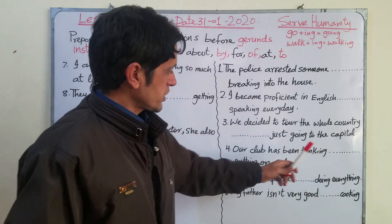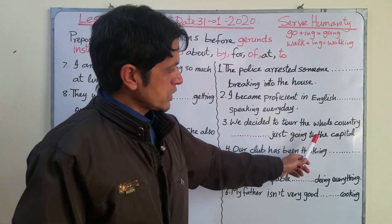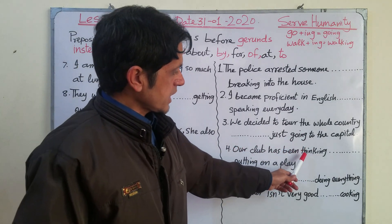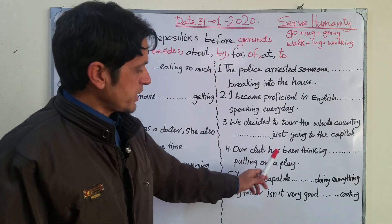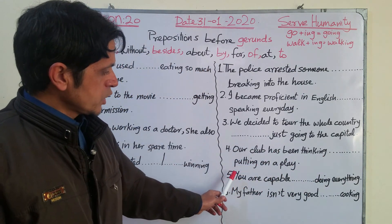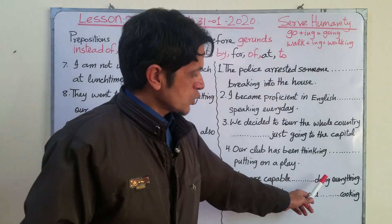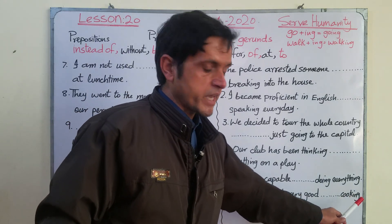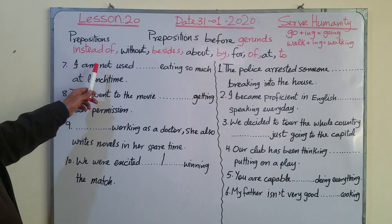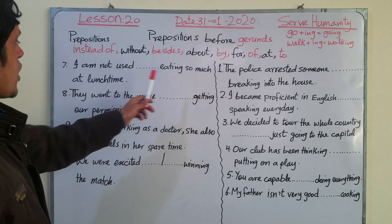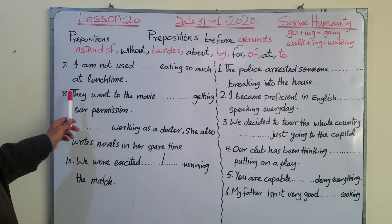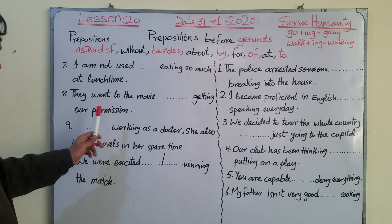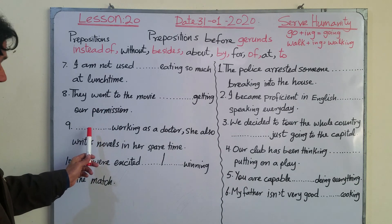Number three: 'We decided to tour the whole country ___ just going to the capital' — 'going' is the gerund. Number four: 'Our club has been thinking ___ putting on a play.' Number five: 'You are capable ___ doing everything.' Number six: 'My father isn't very good ___ cooking.'